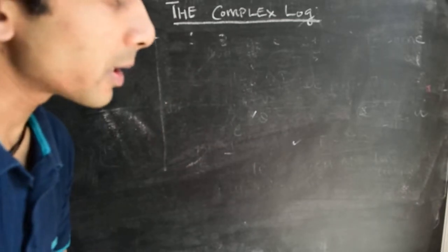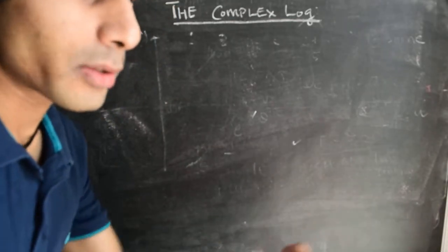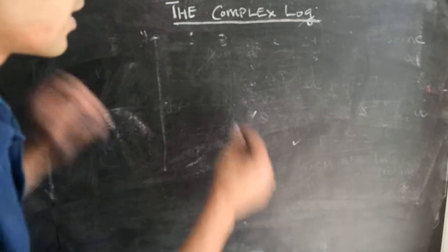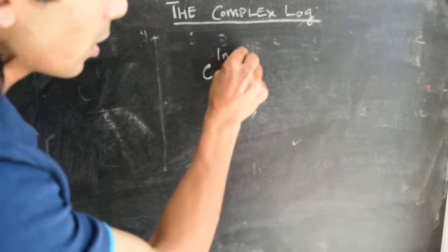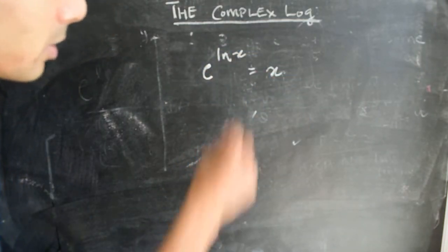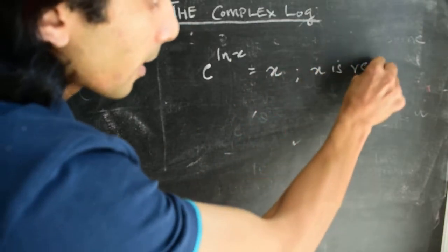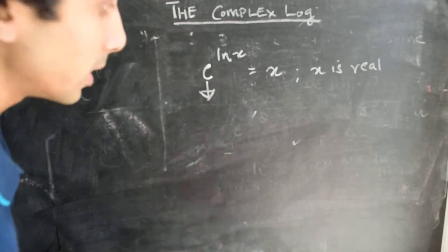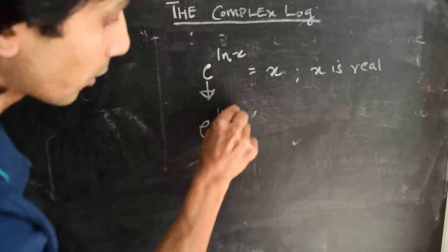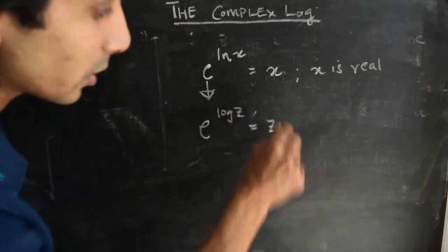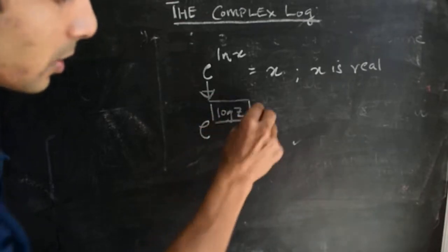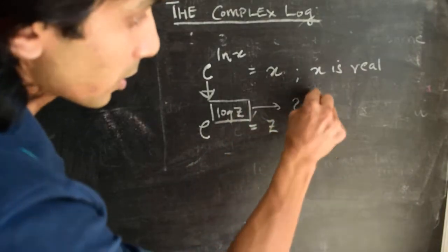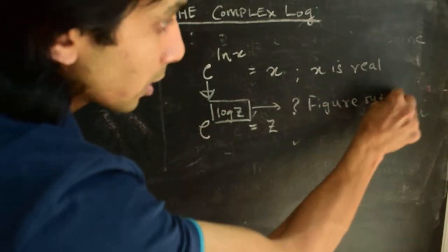One way to start thinking about the complex log function is as a natural generalization of the log of a real number. One property the log of a real number has is that if we take the exponential of the log of a real number, we get back the number itself — where x is real. We look for a complex function which satisfies the same property: we look for a function log(z) such that e to the power of log(z) gives us back the complex number z. Our task is to figure out what this complex function is, and whatever it is, we will call it the complex log function.